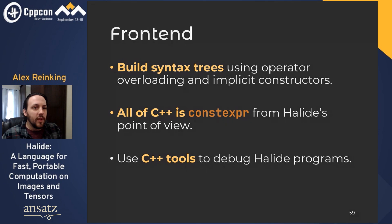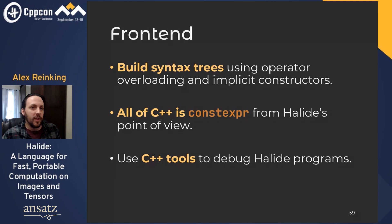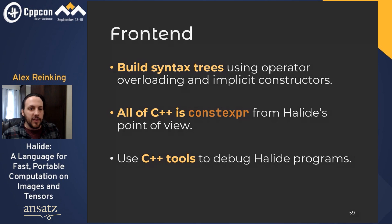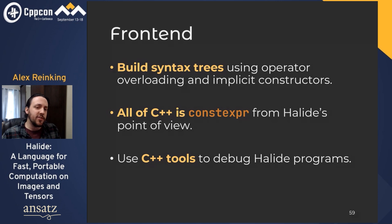The basic way the frontend works is that we overload operators to simplify the creation of syntax trees for specifying algorithms. Because Halide code doesn't run until you schedule it, from the point of view of a Halide algorithm the whole C++ language is effectively constexpr. For loops in C++ get unrolled into Halide syntax fragments; if statements let you conditionally include code in the pipeline. Using C++ as a host language means we get all the benefits of C++ for debugging Halide programs. This is a good design for any domain-specific language because it avoids the chicken-and-egg issue of tooling and developer communities.